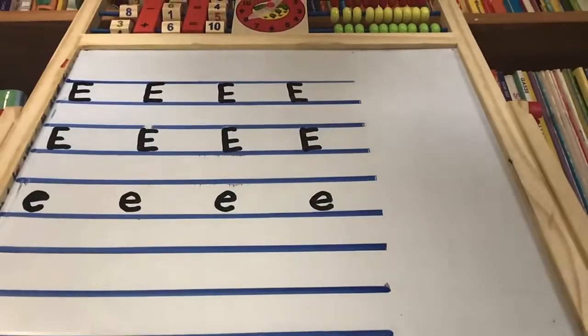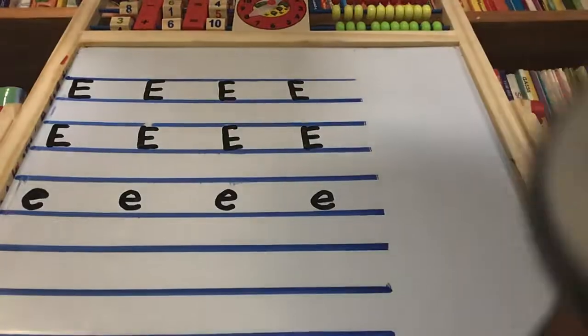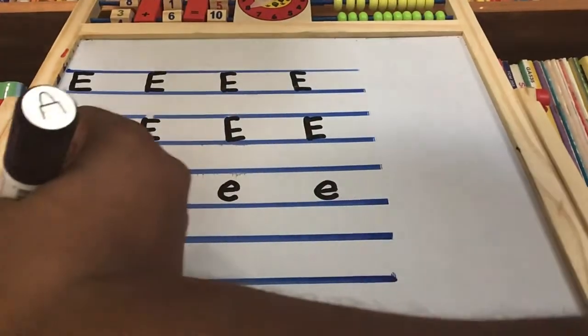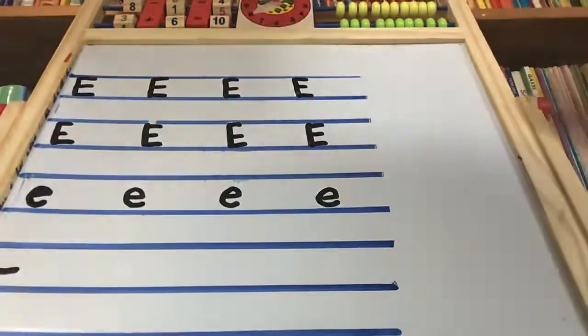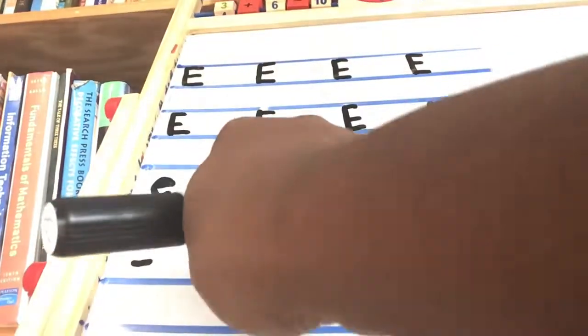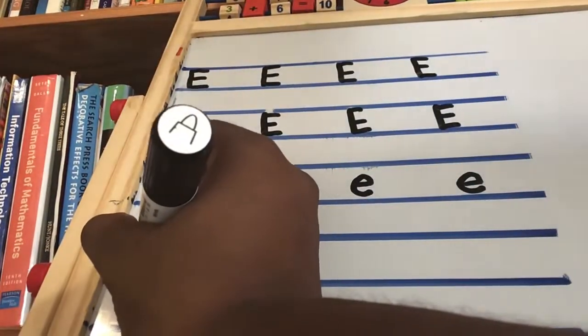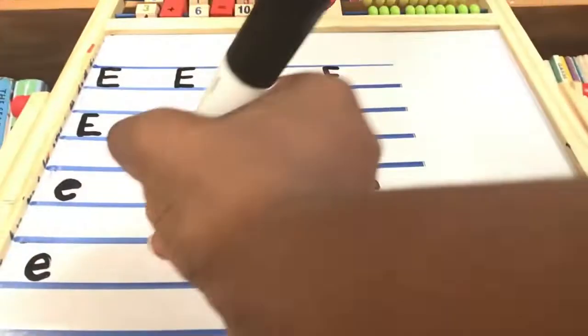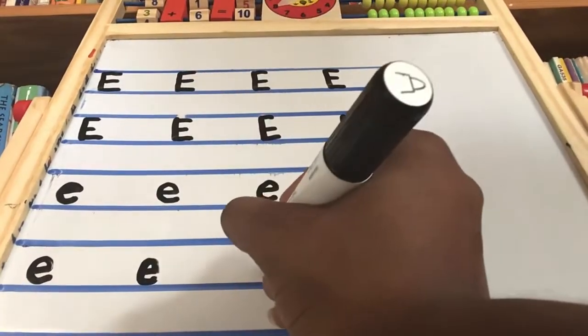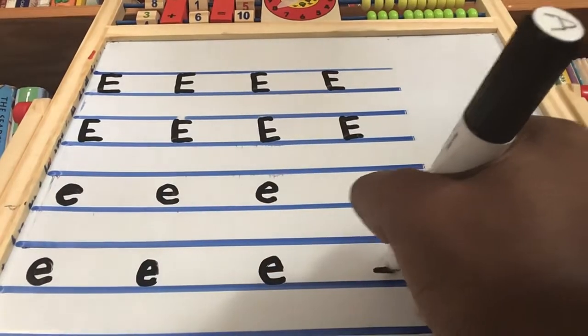And then we're going to skip a line and do the same. We're going to go across. And you see where I started? Somewhere in the middle of this space. Then you're going to go up, around, and come back down. Touch the line. And we're going to do that three more times. And then we are done.